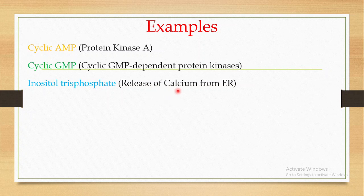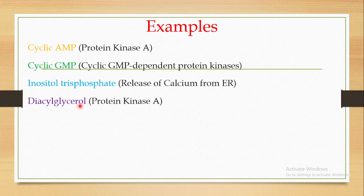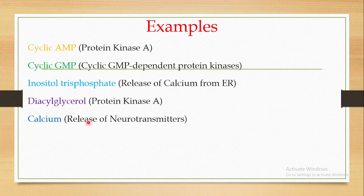Then you have diacylglycerol as another example from the secondary messenger family, and diacylglycerol is responsible for the activation of Protein Kinase C — note that is a typo correction: cyclic AMP activates Protein Kinase A, while diacylglycerol activates Protein Kinase C. Another important example is calcium, which is responsible for the release of neurotransmitters.